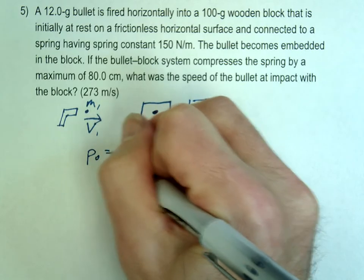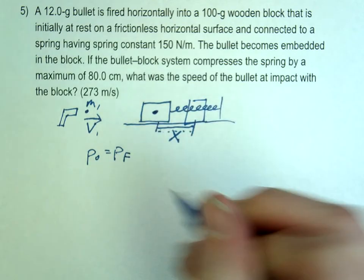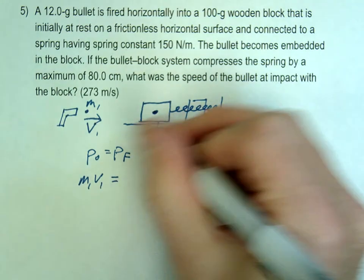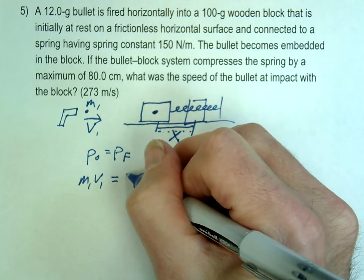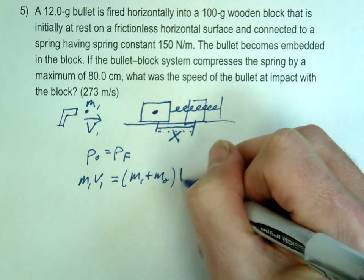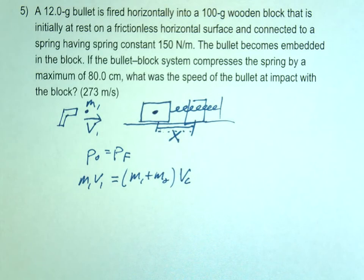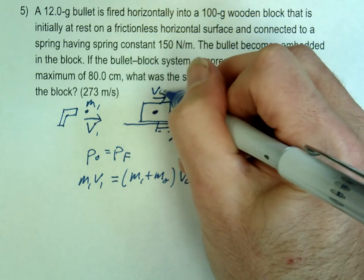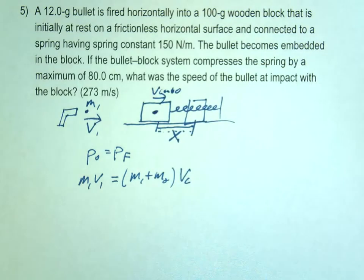p initial equals p final. m1 v1 equals. So now it sticks. So we're going to combine those masses, m1 plus m2, and then we'll call this the combo velocity. So this has a combination velocity here as it's moving.